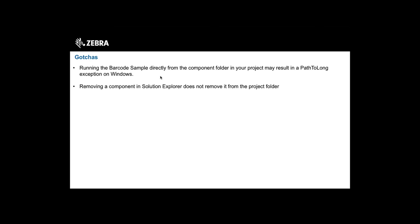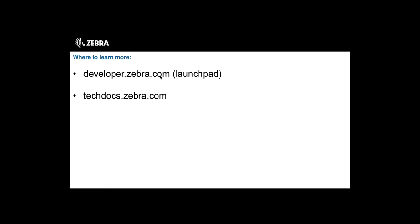Another gotcha: when upgrading from version 1.0 to the upcoming 2.0 EMDK for Xamarin, removing a Xamarin component via Solution Explorer doesn't actually delete it from your project folder — you'll need to go in and physically remove it from the folder structure. For documentation, go to Launchpad or techdocs.zebra.com for the EMDK for Xamarin and EMDK for Android technical documentation.